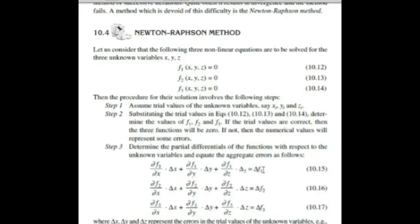Delta f1 equals (∂f1/∂x)·Δx + (∂f1/∂y)·Δy + (∂f1/∂z)·Δz. Adding all these gives us delta f1, which is the error in the function. Whatever values you get for f1, f2, f3 when you put in the trial values — those become your delta f1, delta f2, and delta f3. Similarly, create these equations for f2 and f3 as well.